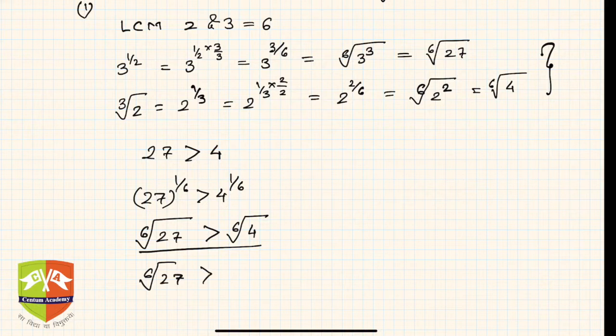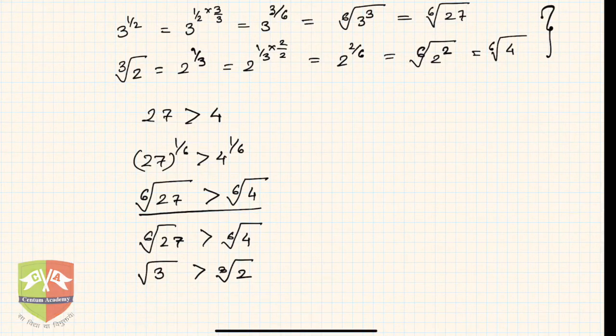Equivalently, sixth root of 27 was nothing but square root of 3, so square root of 3 is greater than cube root of 2. That's the conclusion.